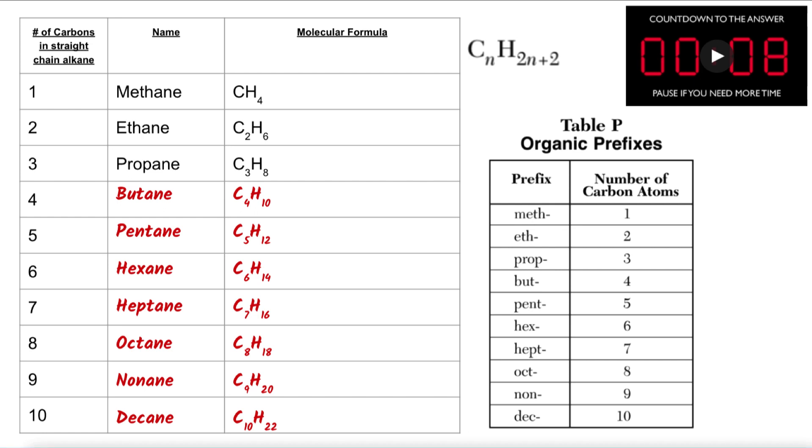Notice each of the molecular formulas here. You will see that for each carbon, in order to determine how many hydrogen atoms I would have in the alkane containing that many carbons, I multiplied the number of carbons by 2 and then added 2.